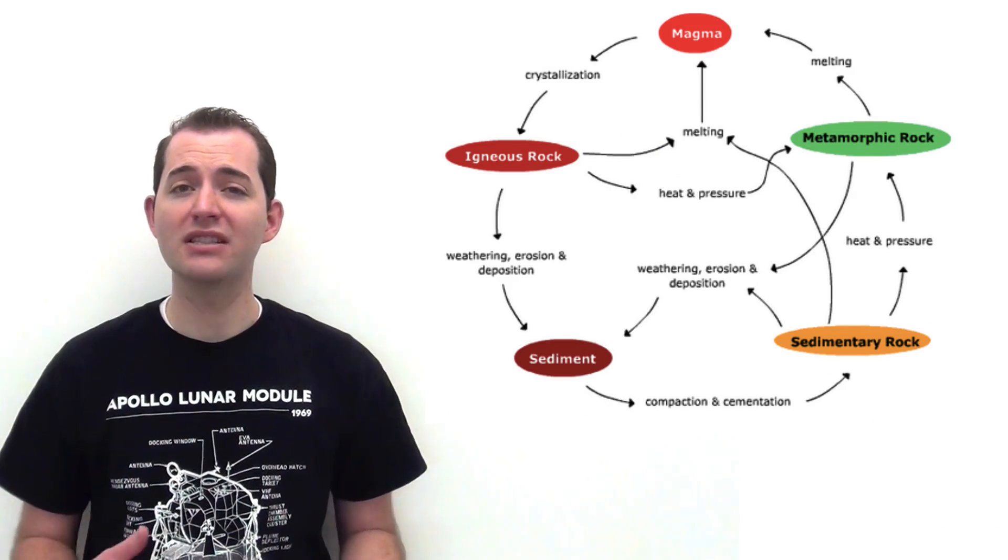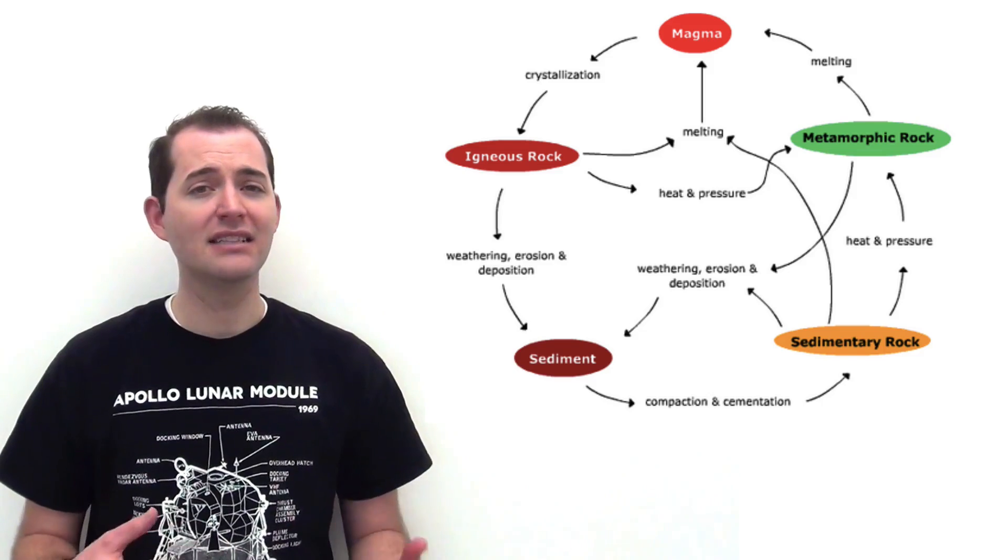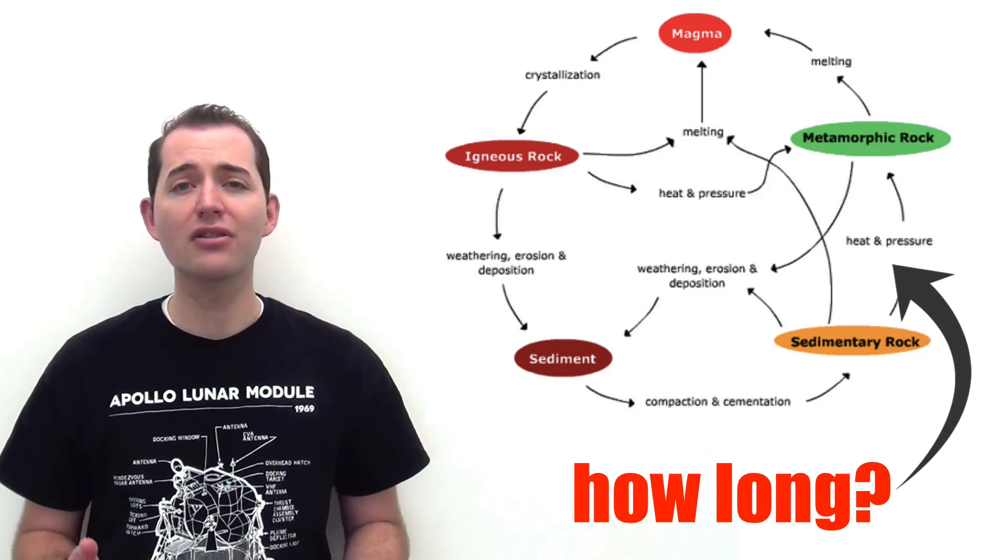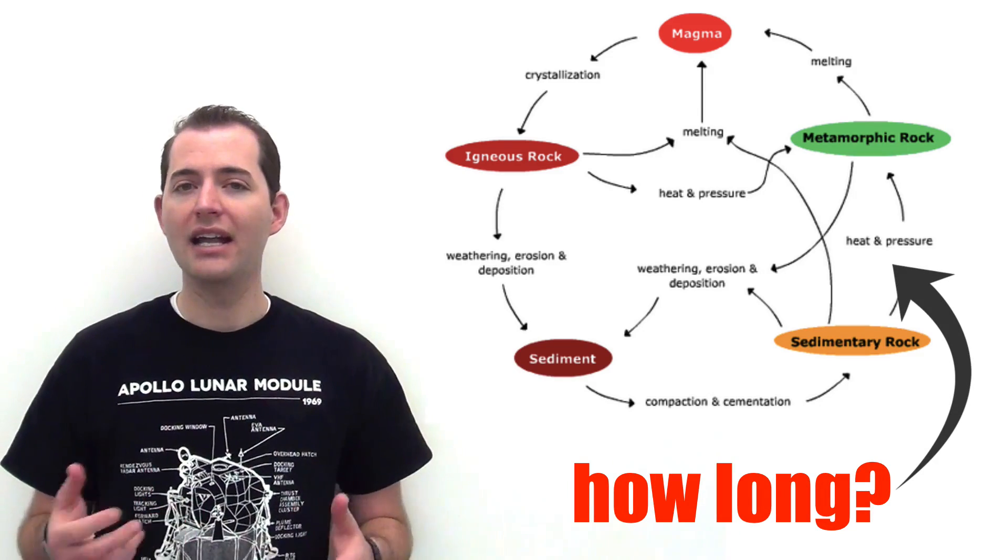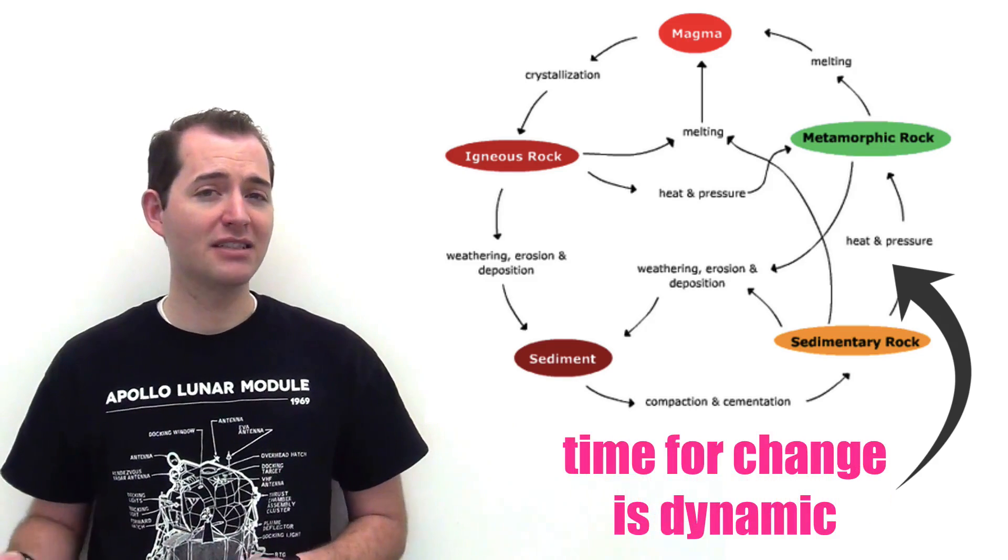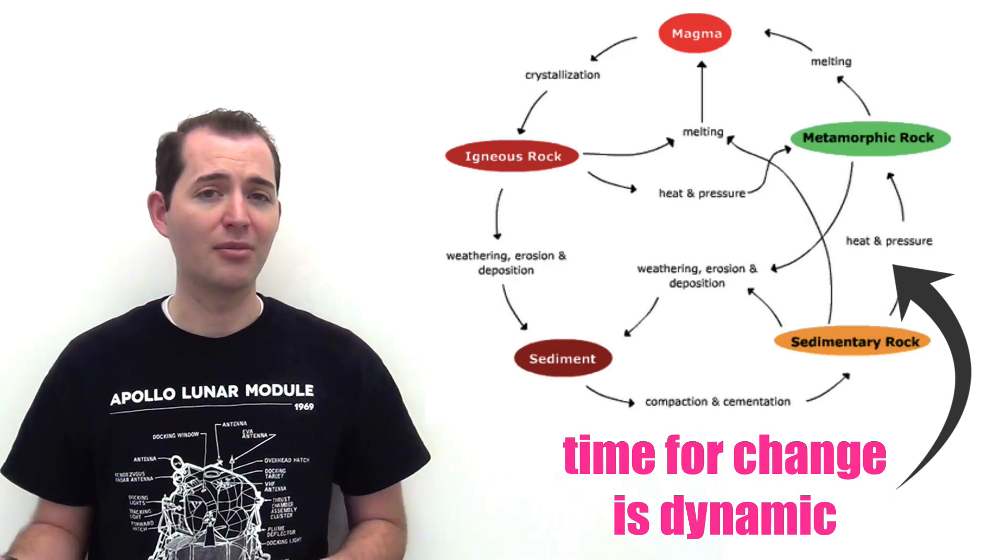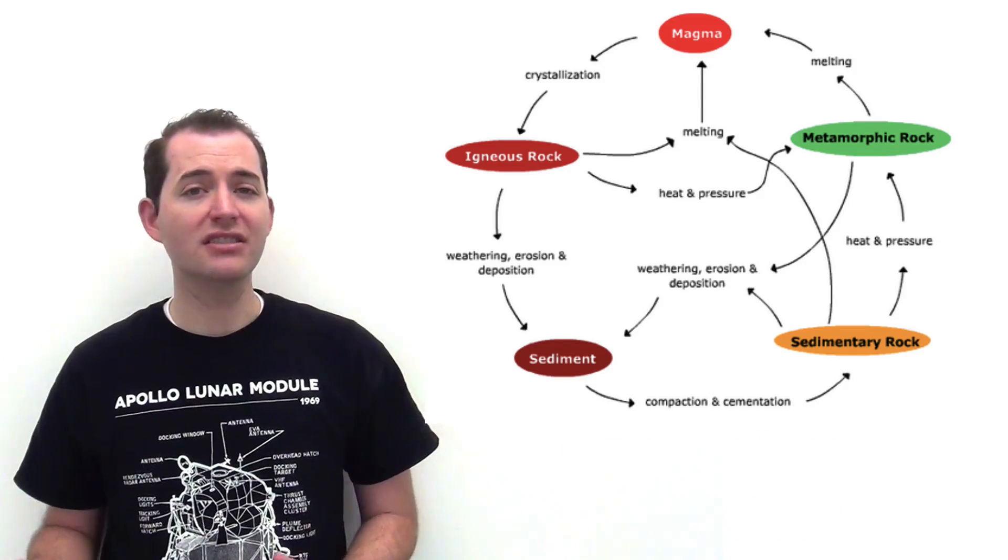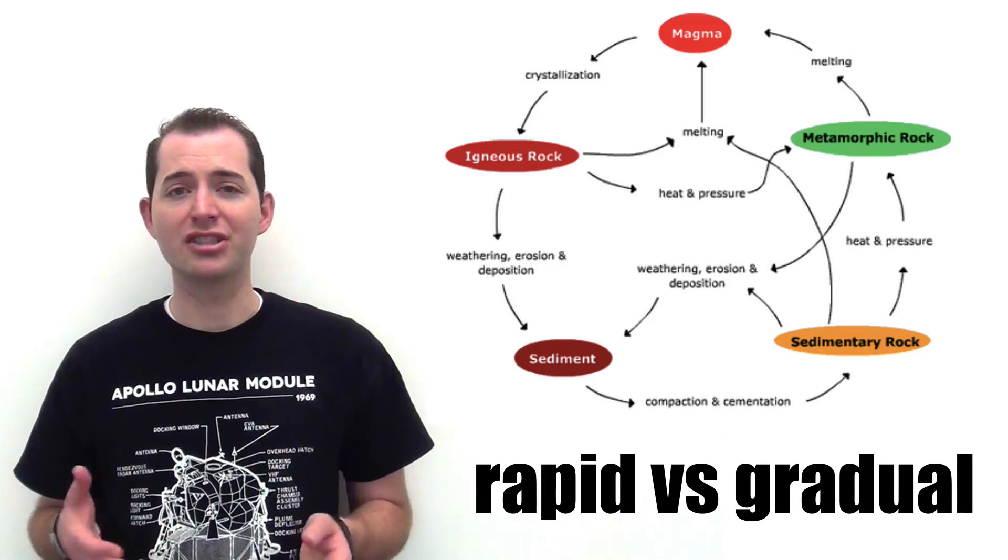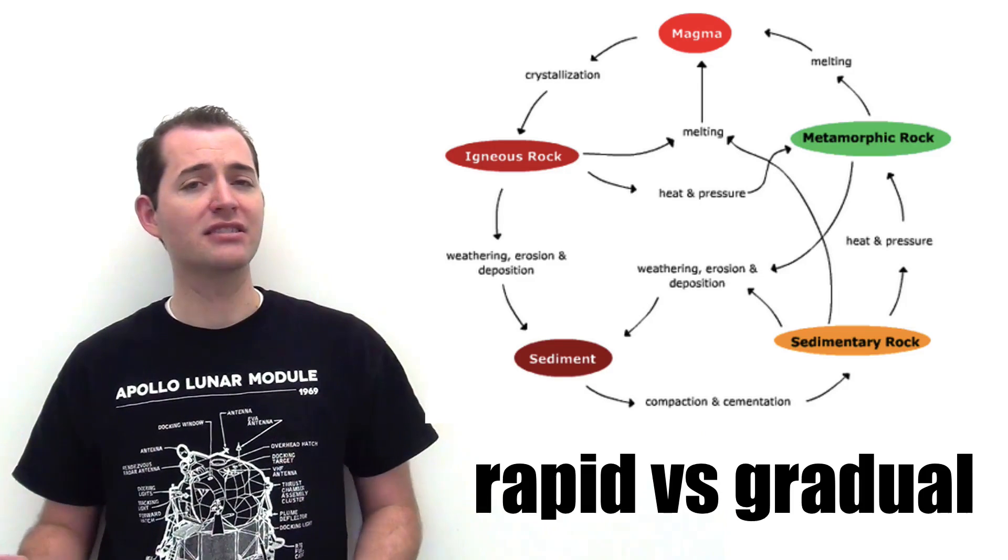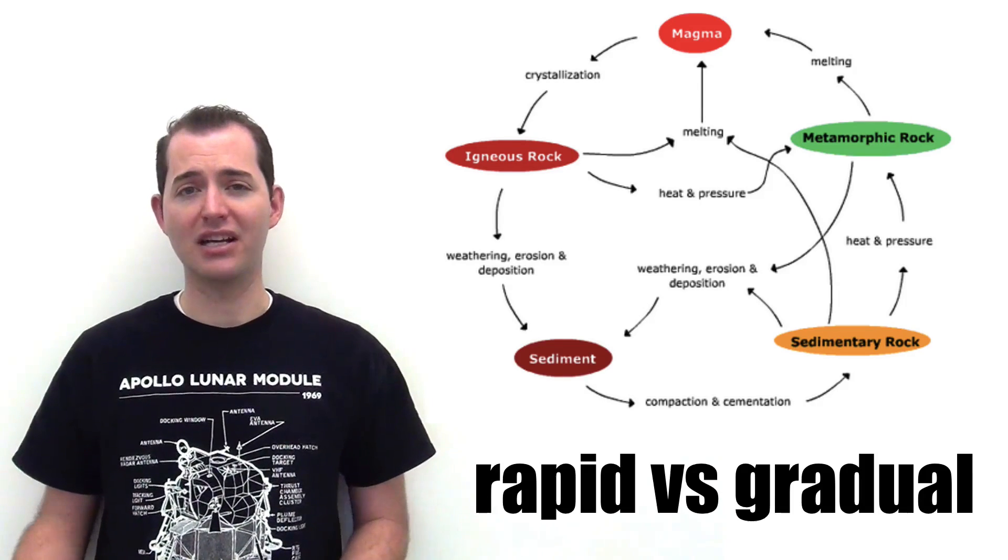One of the challenges of using this model of the Rock Cycle is it gives us no perspective of how long each of these changes might take. And it's important to note that the amount of time it takes for each of these steps of the Rock Cycle is also variable. In some conditions there may be rapid geologic change, but in others the same changes may take an extreme amount of time.